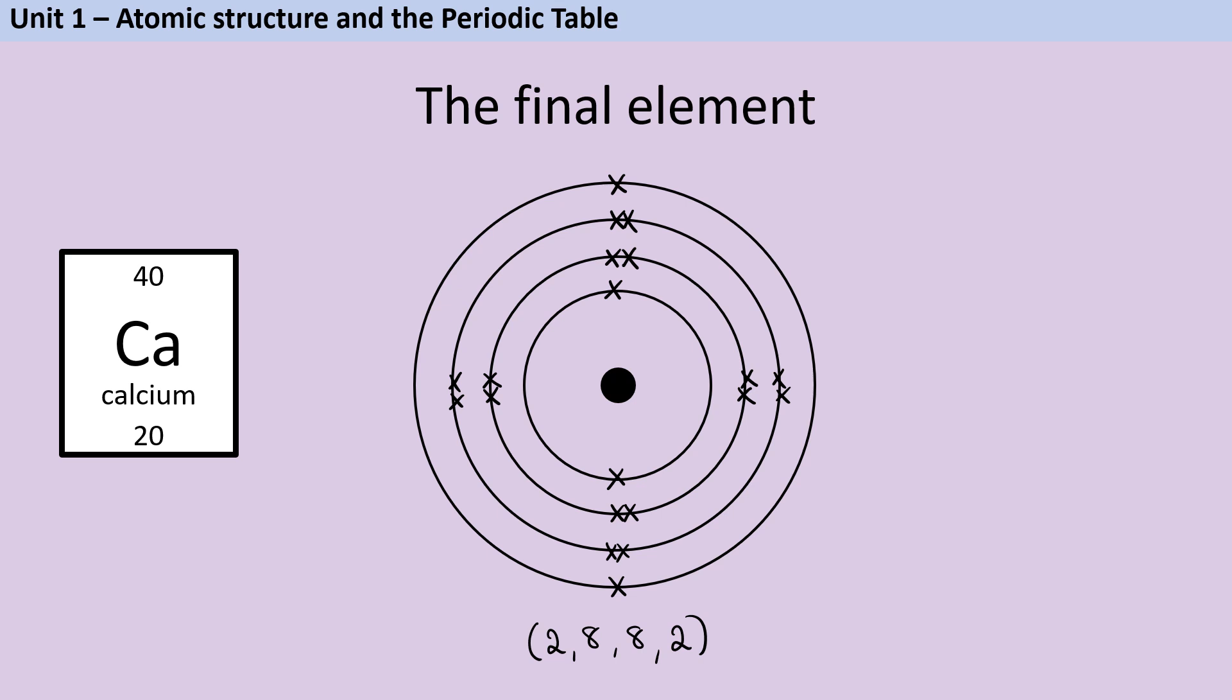So it's not just that they're being kind and saying we'll stop at number 20, it's that these diagrams are not going to work in the same way after element 20. So you can guarantee that that is the last element that you might be asked to draw the electron arrangement for.